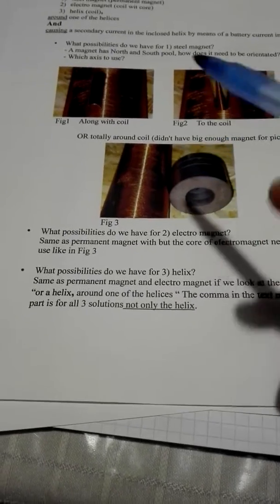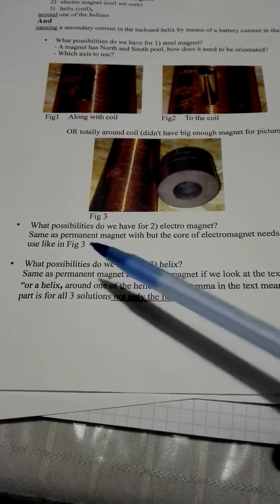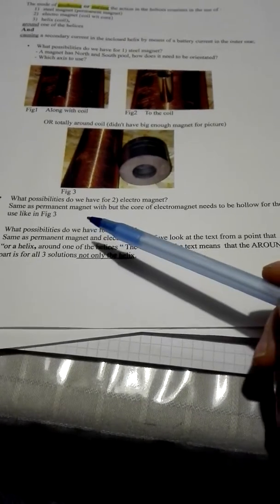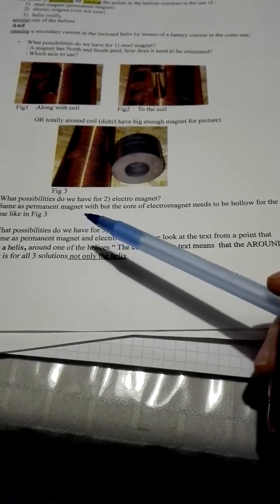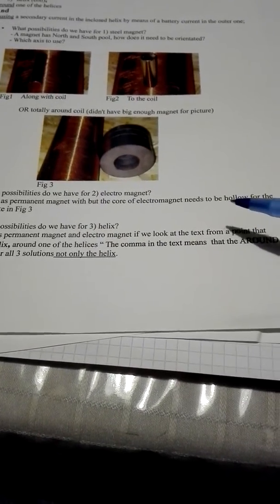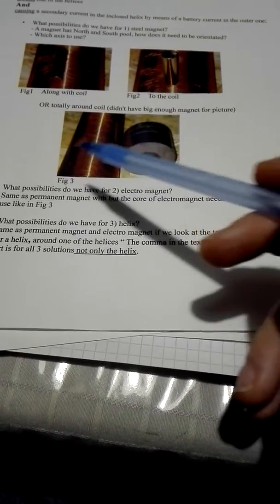Now when I look at the possibilities that we have for an electromagnet, then I see that it's the same as with the permanent magnet. Only difference is that we need to have a hollow core because it must go around.